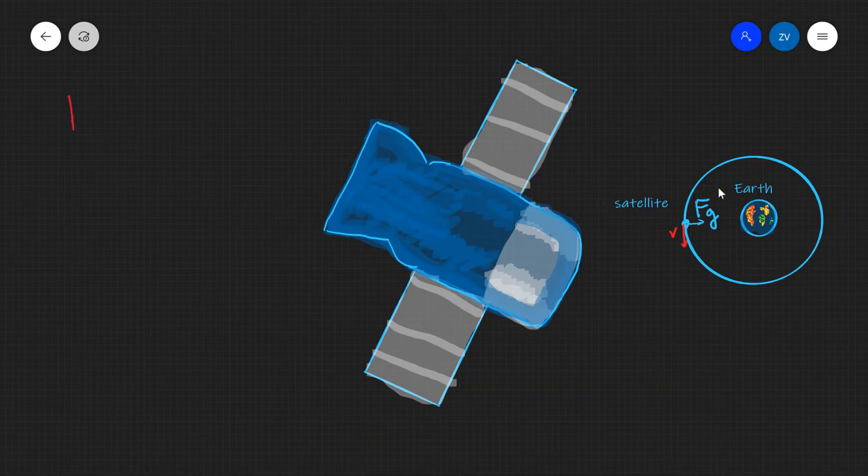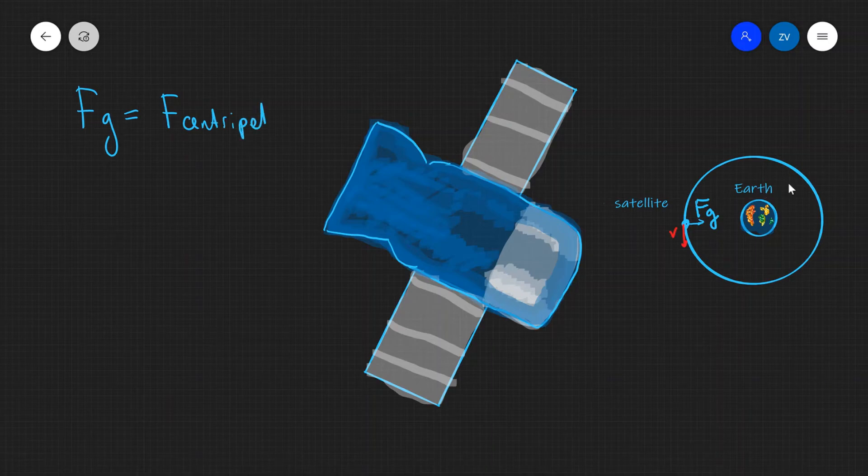So I'm going to say that the gravitational force Fg actually provides the centripetal force, F centripetal, which keeps the satellite in orbit.